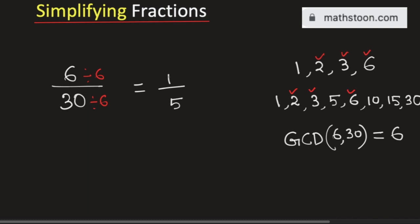And we know that there is no number which can divide both 1 and 5 other than 1. So 1 by 5 is the simplified reduced form of the fraction 6 by 30. And this is our final answer. Thank you for watching.